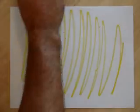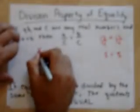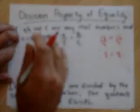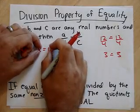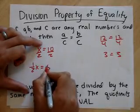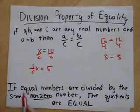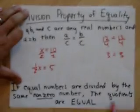Let's talk about the Division Property of Equality. If A, B, and C are any real numbers and A equals B, then you can take those two equal numbers and divide them both by the same thing — it'll still be equal. You know 12 equals 12. Divide them both by 4 and it's still equivalent. For instance, if X equals 10 and I divide both sides by 2, X is still equal to 10 — half of 10 is 5. If equal numbers are divided by the same non-zero number, the quotients are equal.